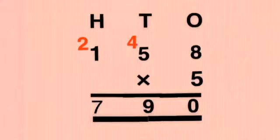we multiply 158 by 5. First, multiply 8 by 5, which equals 40. We write 0 in the ones place and carry 4.